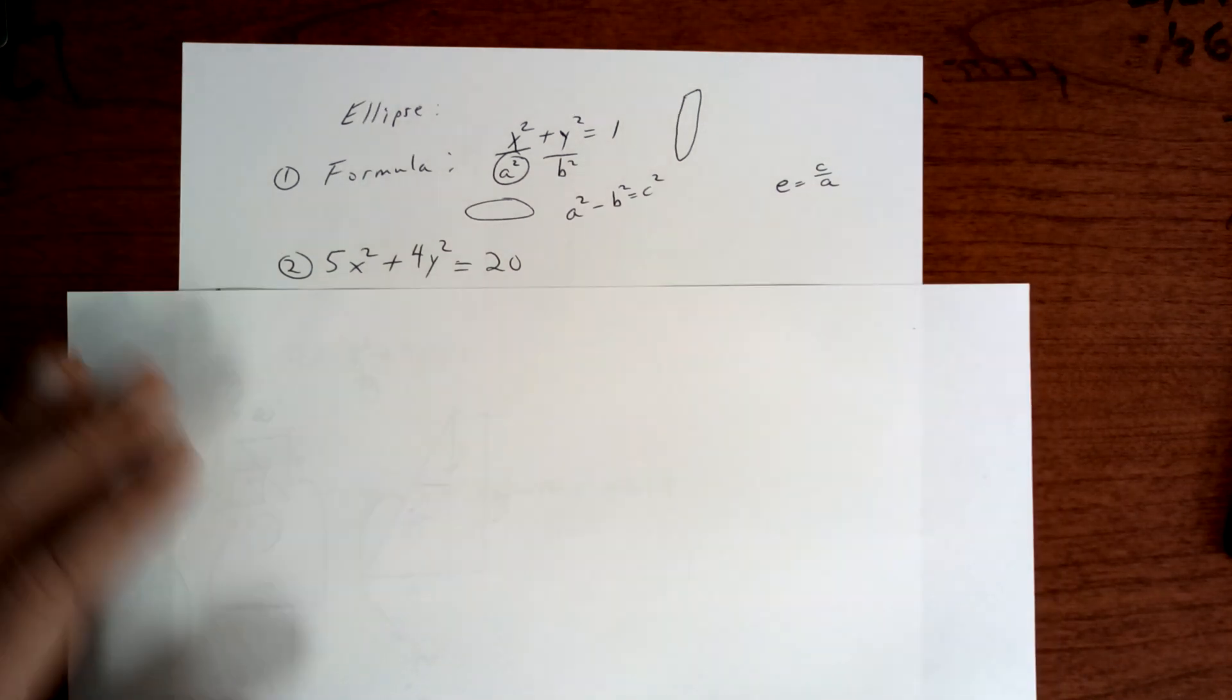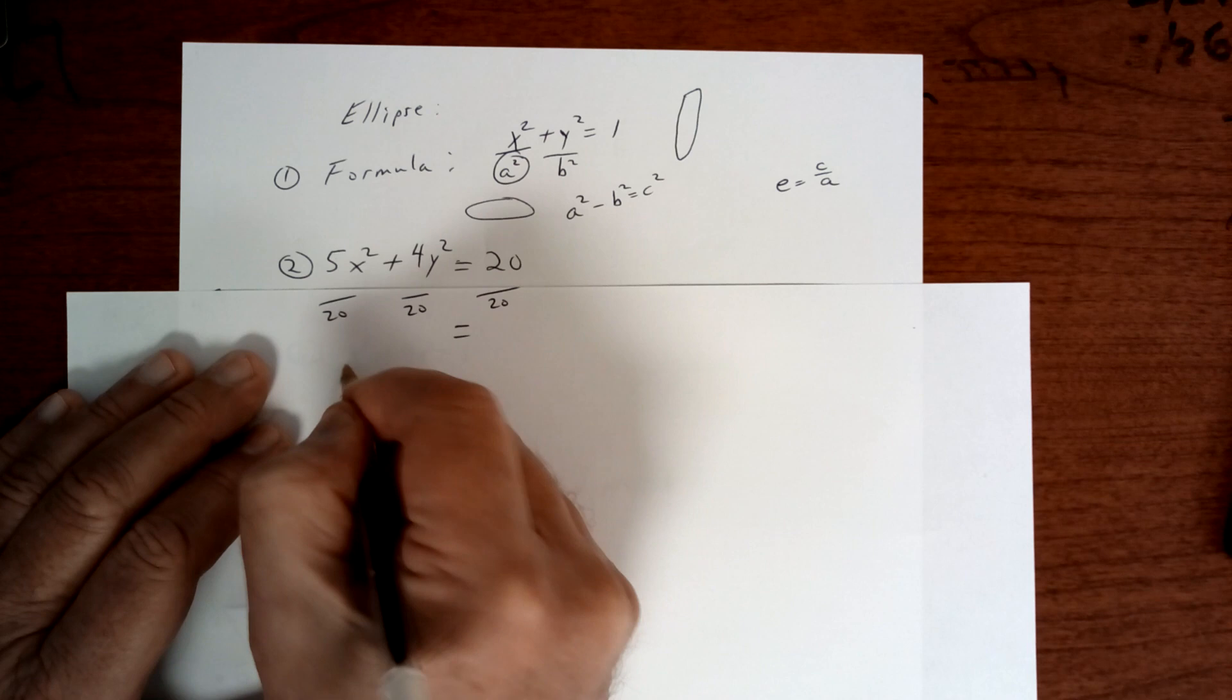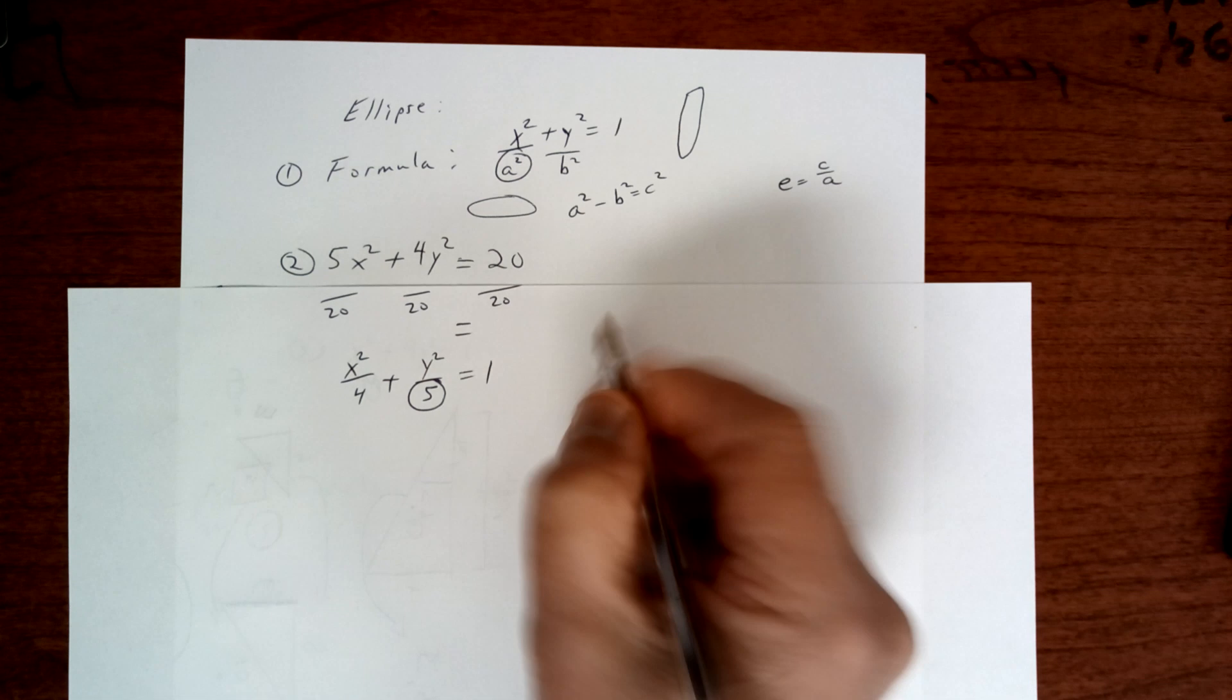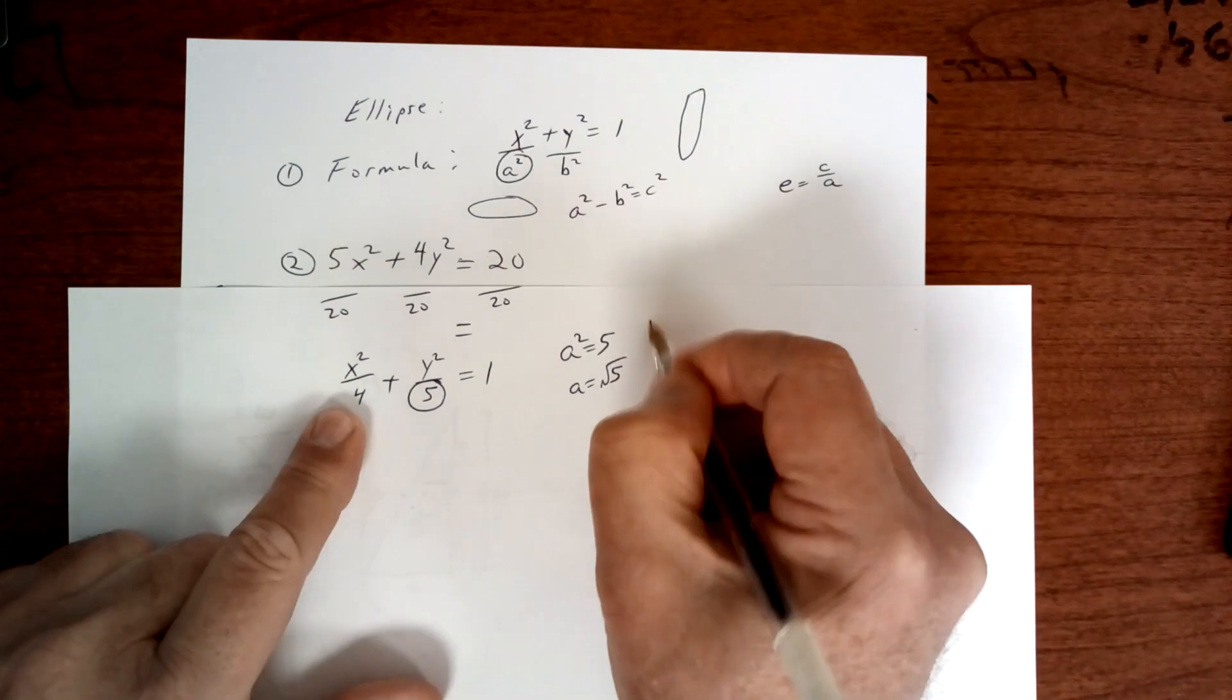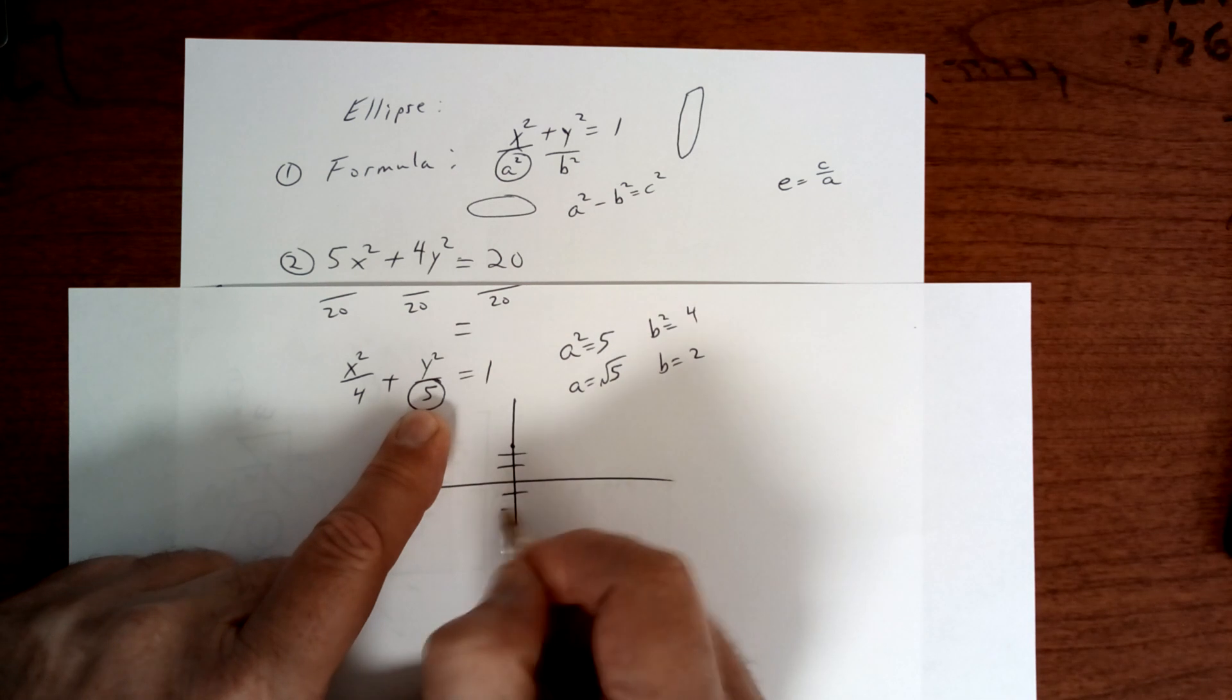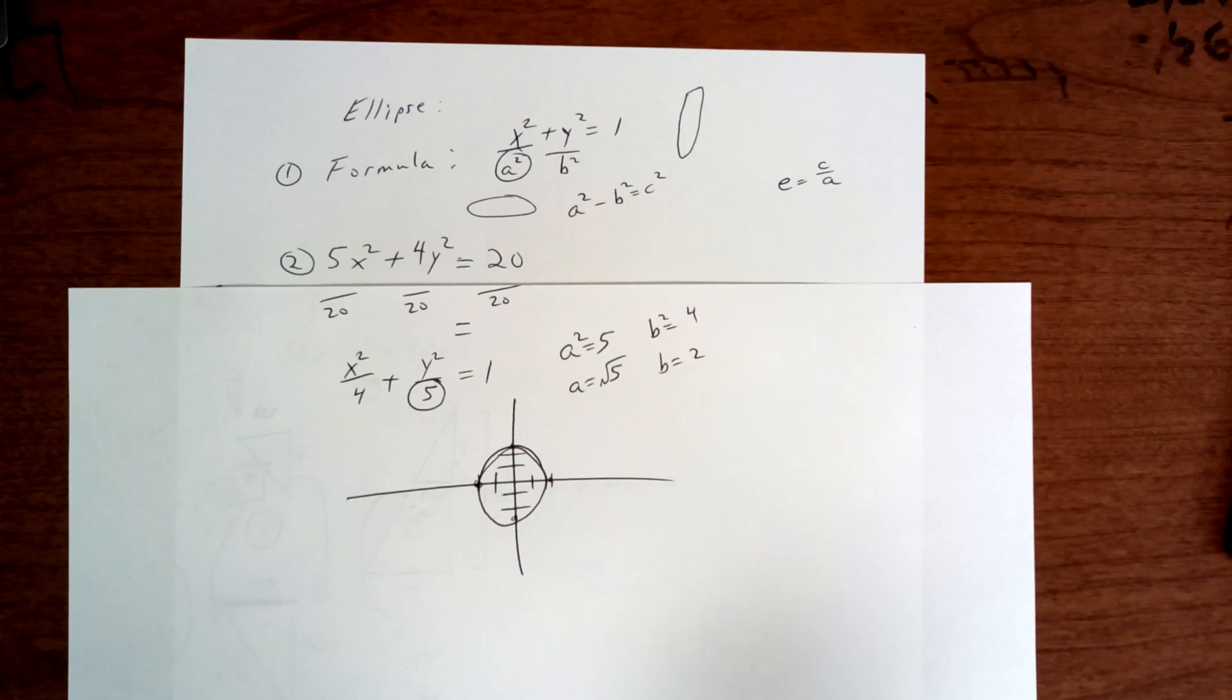Alright, let's work this one. To work this one right here, what you're going to do is divide everything by 20. Because you want to get it equal to 1. So divide by 20. And this is going to give you x squared over 4. This gives you y squared over 5. And this gives you 1. Now at this point, the a squared is bigger right here. So you're going to say a squared equals 5. A equals the square root of 5, which is 2 point something. Then you're going to say b squared is equal to 4. B is equal to 2. Now how does this look? Well, this is under the y. So you're going to go up 2 and a little bit more. Down 2 and a little bit more. You're going to go over 2, which is the minor axis like this. And your graph is going to be something like that. And that's how you graph that ellipse.